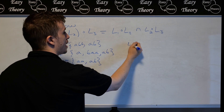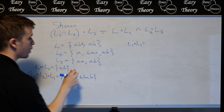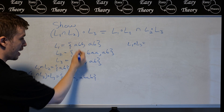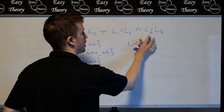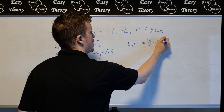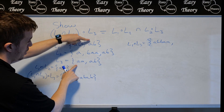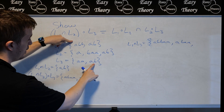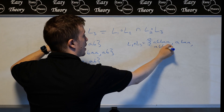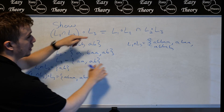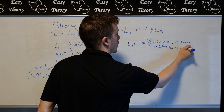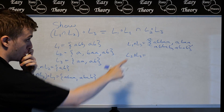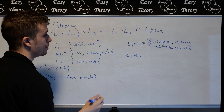If we evaluate the right side, we get L1 concatenated with L3. That's going to have four things in it: AB·AA, AB·AB, AB_B·AA, and AB_B·AB. So we did those. Now let's look at these.